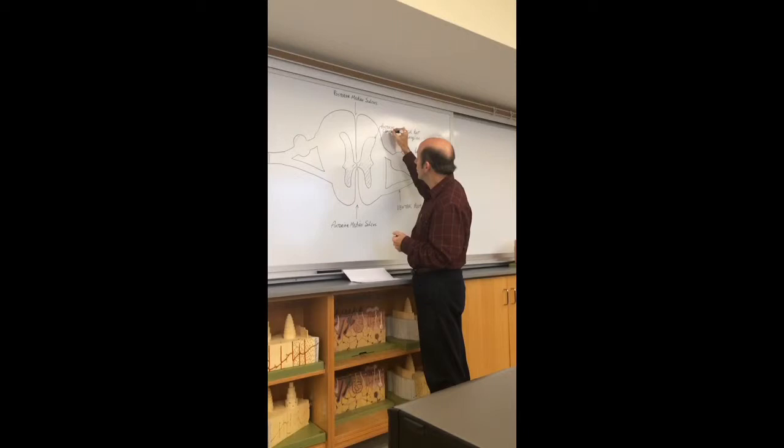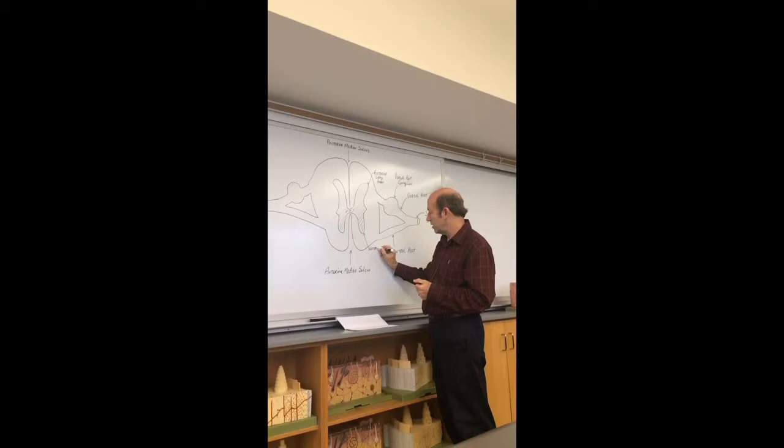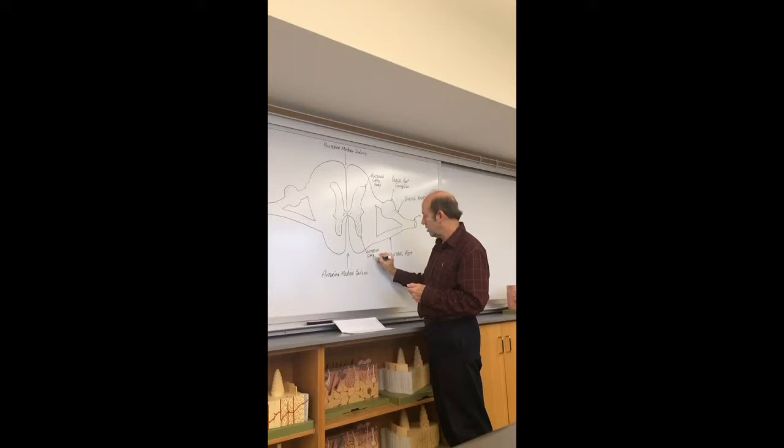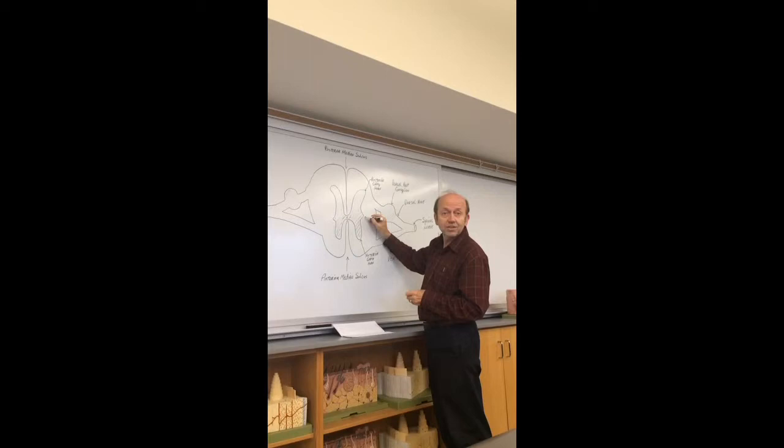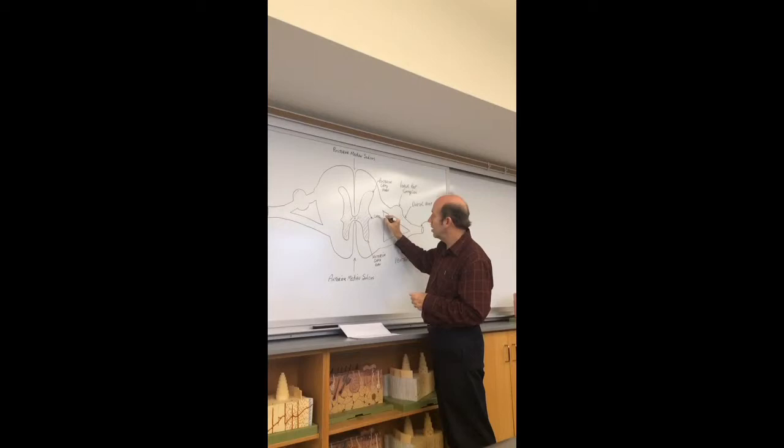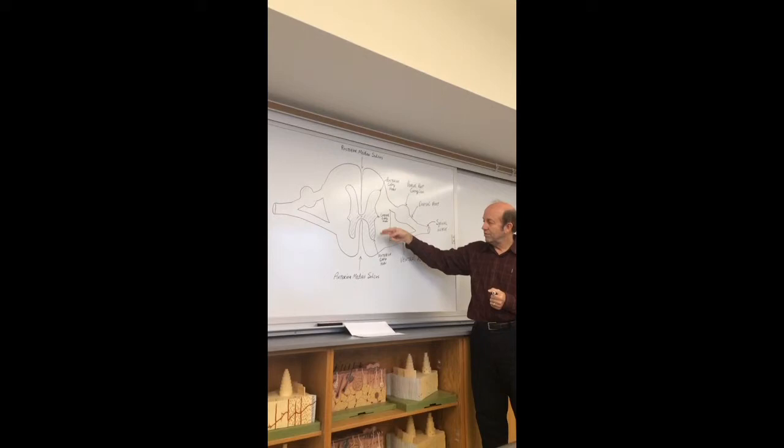What do you think this one is? Anterior gray horn. Anterior gray horn, right. So what's the one in the middle? What's on your list? Lateral. Lateral. Gray horn. That wasn't too hard, was it? Posterior gray horn, anterior gray horn, lateral gray horn.